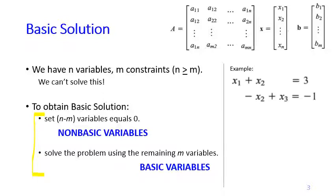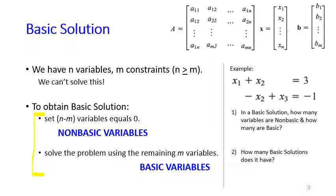Let's look at an example. We have three variables and two constraints, so clearly we cannot solve this directly. To obtain a basic solution, we set n minus m — that is, three minus two — equals one variable as non-basic, and solve the remaining two as basic variables.